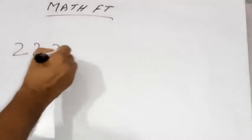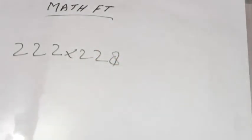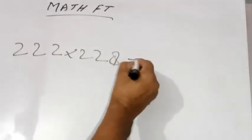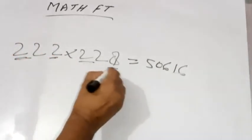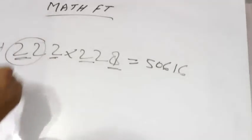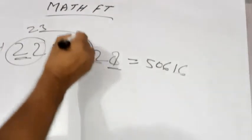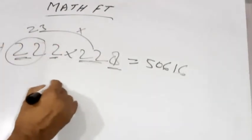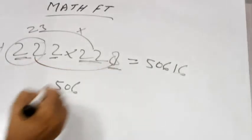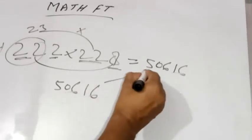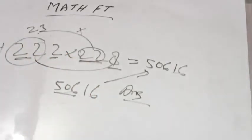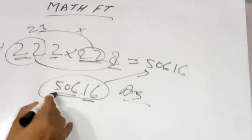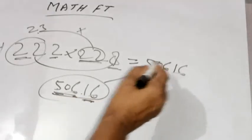See another one. 222 is multiplied by 228. The answer will be 50616. How is this possible? This is one group, this is another group. Add plus one: this will be 23. When 23 is multiplied by 22, this will be 506. Then the rest: 2 multiplied by 8 equals 16. So the answer is 50616 — fifty thousand six hundred sixteen. You can check by your calculator. Both answers are correct.